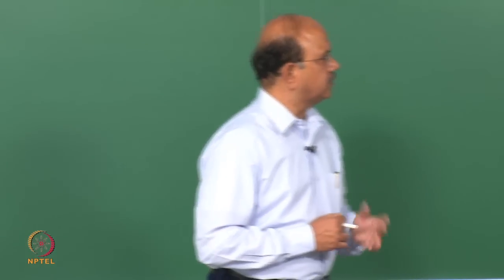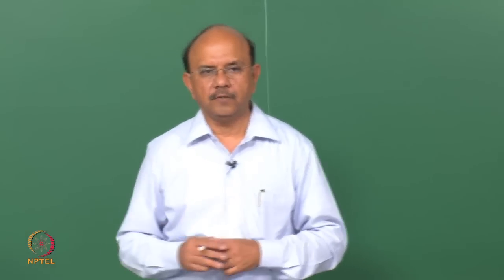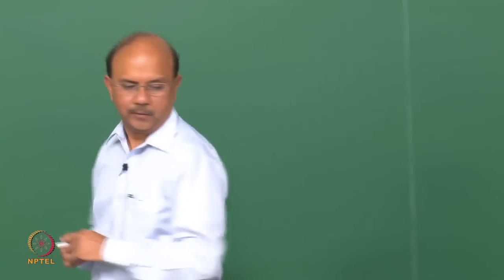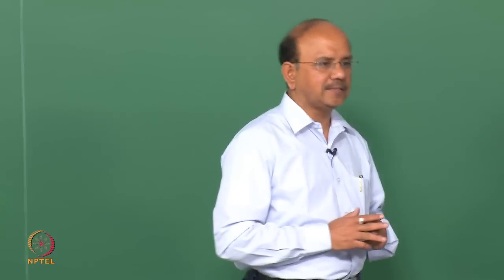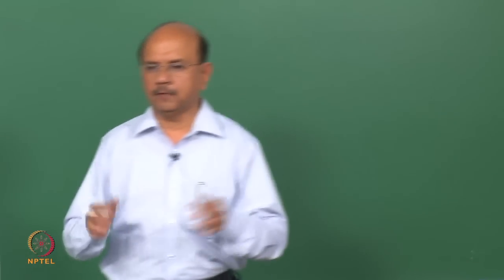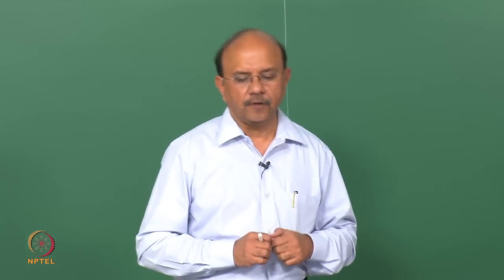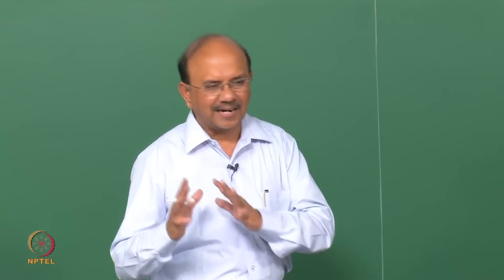We were looking at what is called an observation. In a probability sense, an observation is an experiment and the result is the outcome. In our case, we are looking at the roughness of the road. The set of all possible outcomes is what we call the sample space. A subset of the sample space is an event. The function or map from an event to the real line is what we call a random variable.